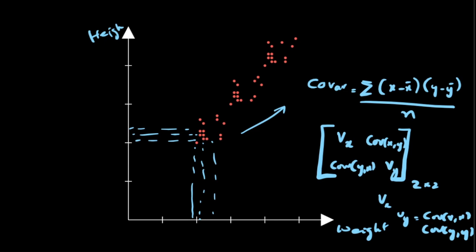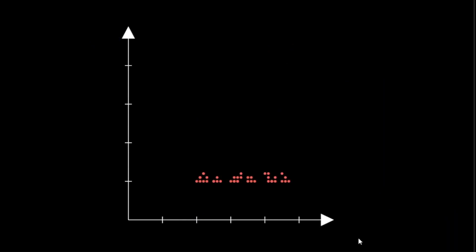The covariance matrix is very important in that it gives us the direction in which the data set has the highest amount of variance. Let us understand this with an example — assume we have a data set like this.